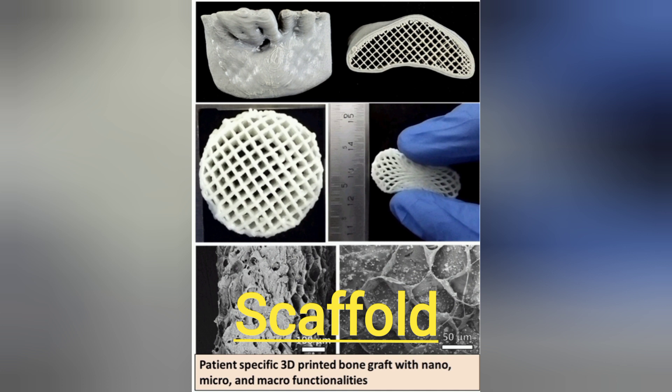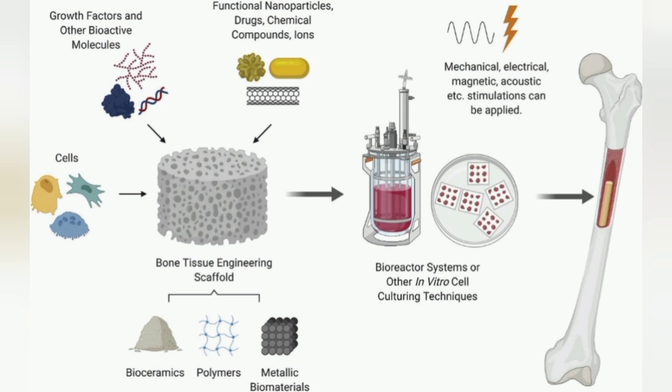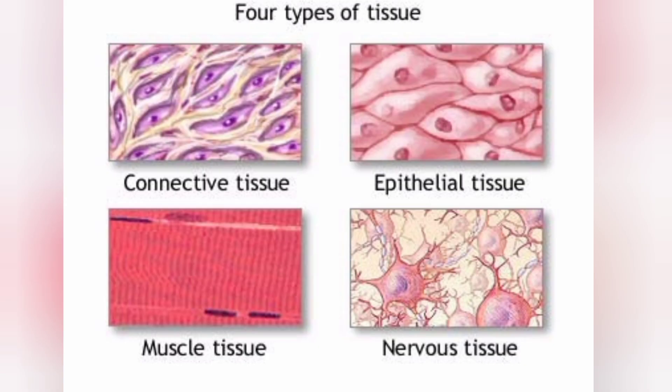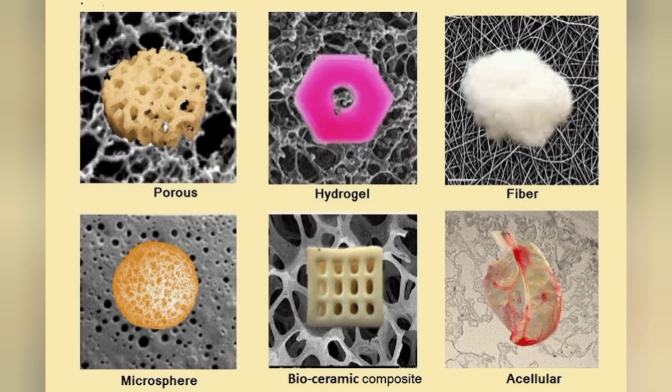The next component of tissue engineering is the scaffold used in the procedure. Scaffolds for tissue engineering are support structures designed to facilitate cellular growth and proliferation upon implantation into the patient. There are different types of tissues in the body: connective tissue, epithelial tissues, muscular tissues and nervous tissues. For different types of tissues, different types of scaffolds are used in tissue engineering and are classified as fibrous, porous, hydrogel, microspheres, bioceramic composites and acellular type.